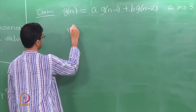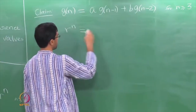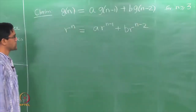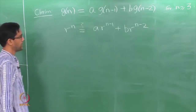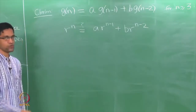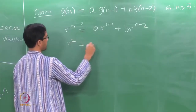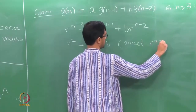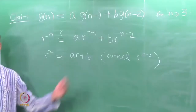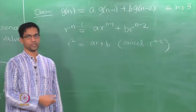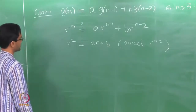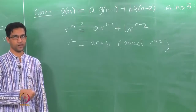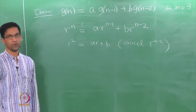The proof is straightforward. We need to check that r to the n equals a times r to the n minus 1 plus b times r to the n minus 2. If you cancel off r to the n minus 2 from both sides, this equation is just r squared equals ar plus b, which was our assumption that r is a root of the quadratic equation. So it is rather trivial once we know what we want to prove.